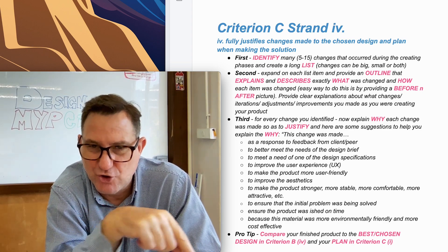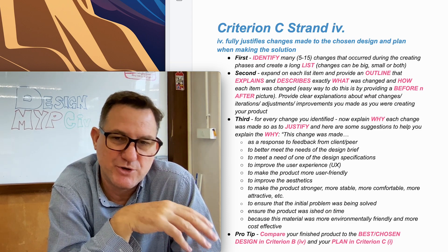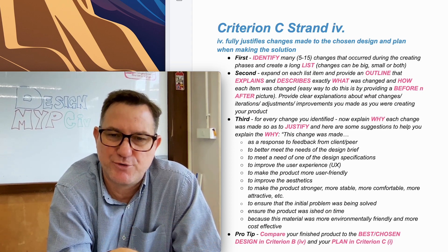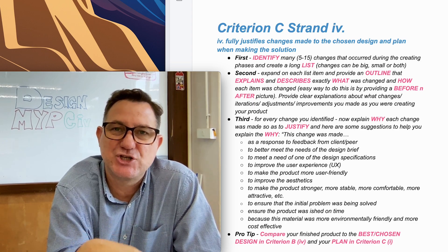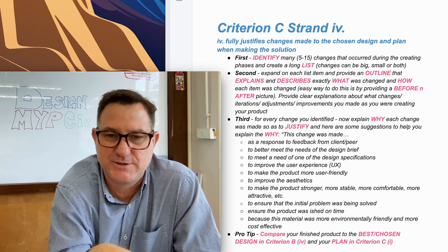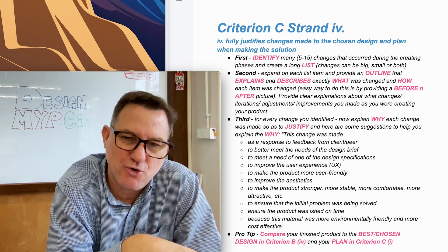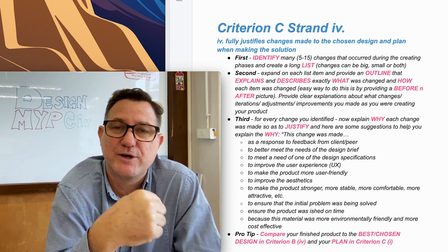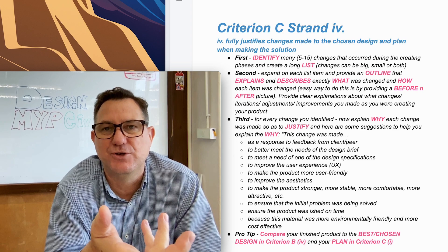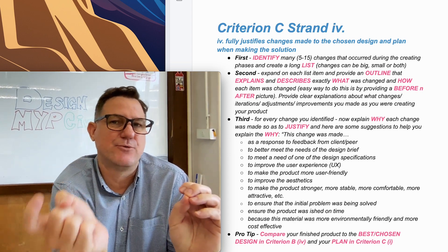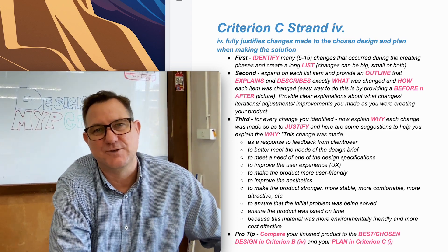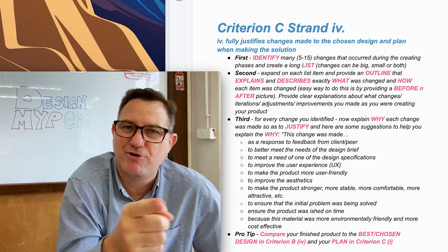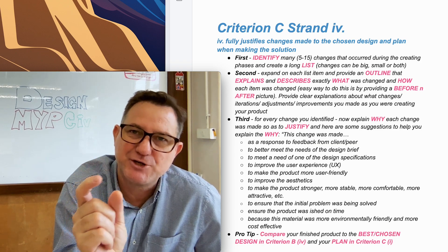Other strong justifications include: for a better user experience — making the product more user-friendly by thinking about the audience; to improve the form or aesthetic of your product; to make it stronger, more stable, more comfortable, or more attractive. You can also revisit the original problem from Criterion A — you may have made the change so it better responds to that problem. These are all strong reasons why you made your changes, and they will help you get top marks by fully justifying your decisions.